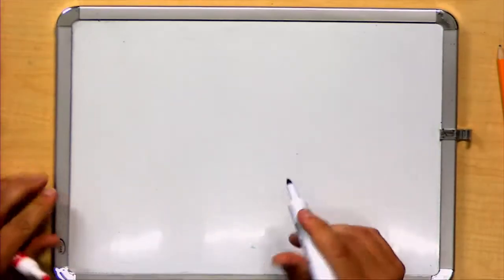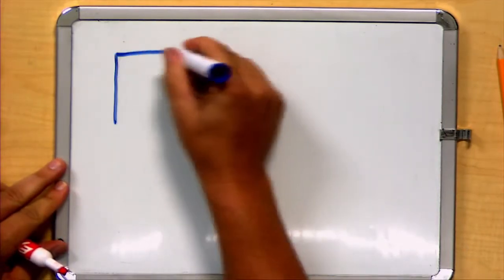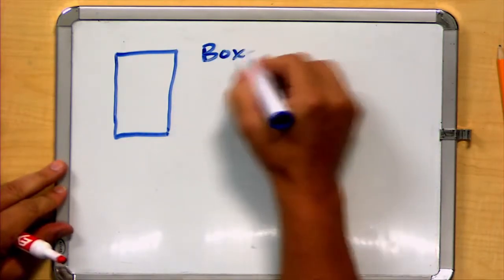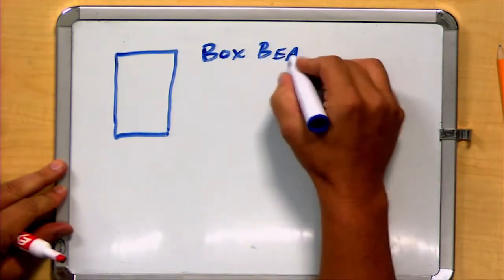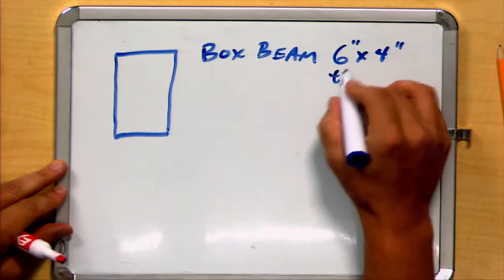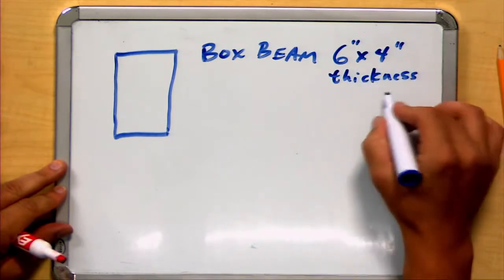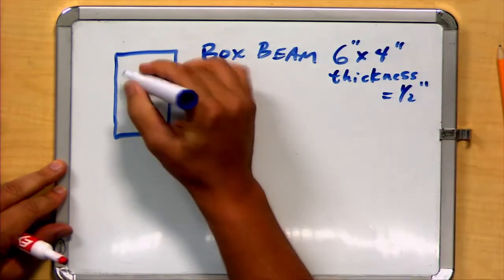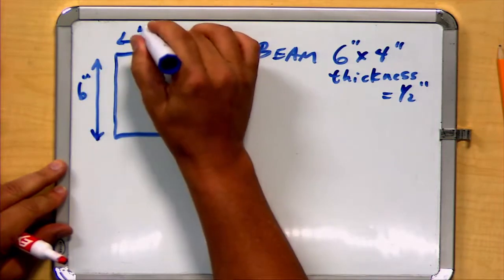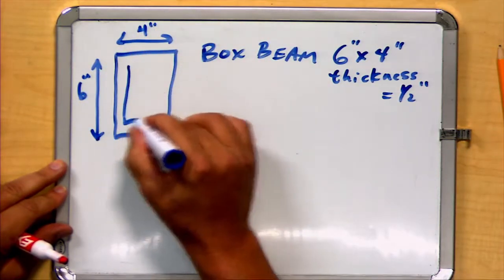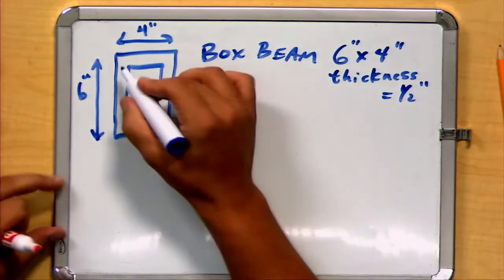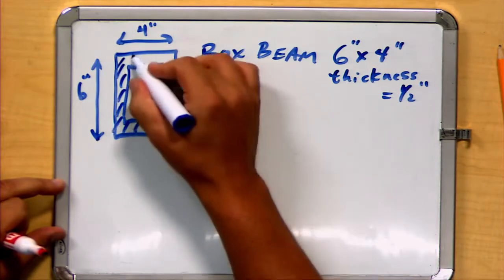So let's consider first a box beam. This box beam, we're going to give certain dimensions. We'll consider it to be 6 inches by 4 inches, with a thickness of 1/2 inch. The 6 inches will be the vertical dimension, and you can see that we have a 1/2 inch thickness all the way around.